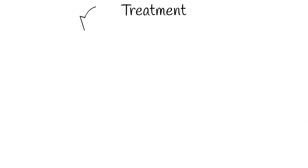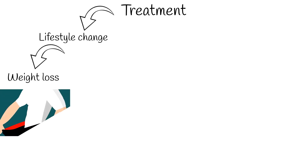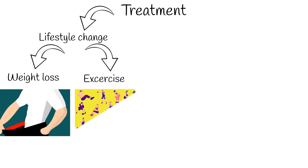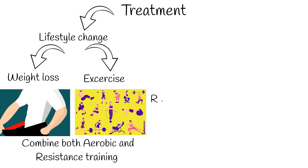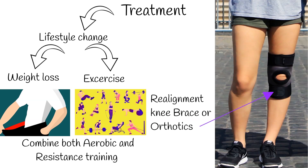Treatment: Weight loss is important if obesity or overweight is present. Each kilogram of weight loss can decrease the load across the knee three to six fold. Exercise is crucial; combined aerobic and resistance training has been shown to decrease pain and improve physical function. Malalignment of joints should be corrected via mechanical means, such as a realignment knee brace or orthotics.